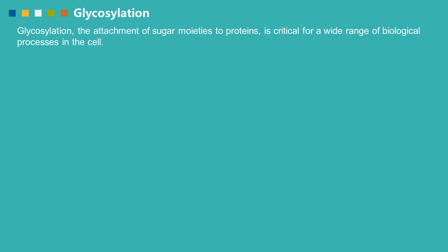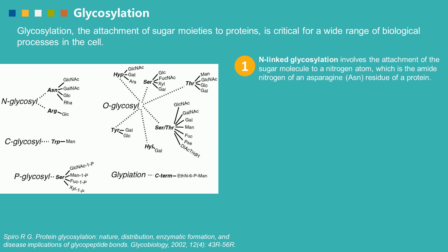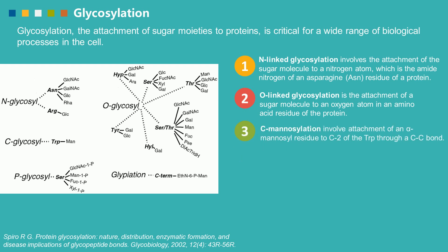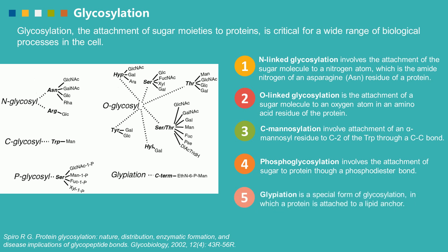Glycosylation, the attachment of sugar moieties to proteins, is critical for a wide range of biological processes in the cell. There are different types: N-linked glycosylation involves the attachment of a sugar molecule to a nitrogen atom, specifically the amide nitrogen of an asparagine residue. O-linked glycosylation is the attachment of a sugar molecule to an oxygen atom in an amino acid residue. C-mannosylation involves attachment of an alpha-mannosyl residue. GPI anchor glycosylation involves the attachment of a sugar to proteins through a phospholipid bond, and is a special form in which a protein is attached to a lipid anchor.